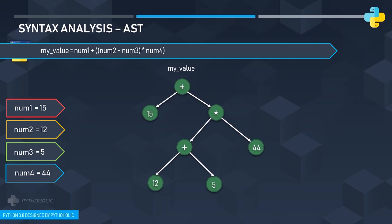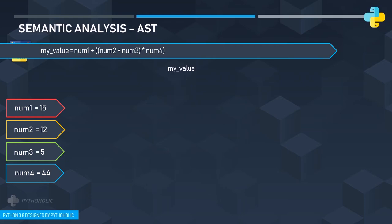Python follows the PEMDAS pattern — Parentheses, Exponents, Division, Multiplication, Addition, Subtraction — which decides the order in which operations are executed. If there are no syntax errors, it moves to semantic analysis, where the analyzer checks the type of variables and operations (whether integers, strings, or booleans) and verifies that the program allows the intended operation. For instance, some languages don't allow integers to be multiplied with strings, unlike Python, which duplicates the string the specified number of times.